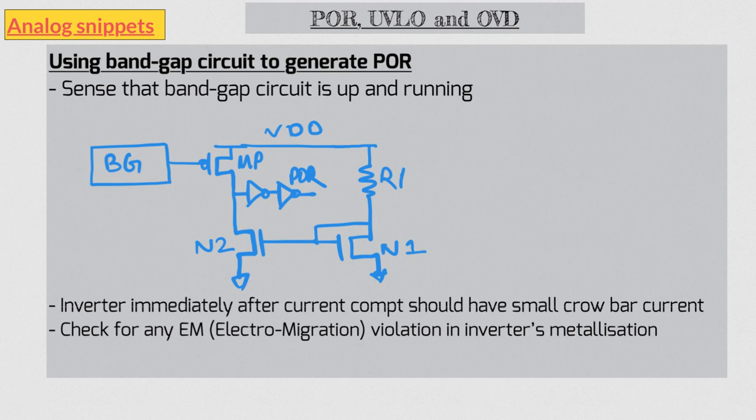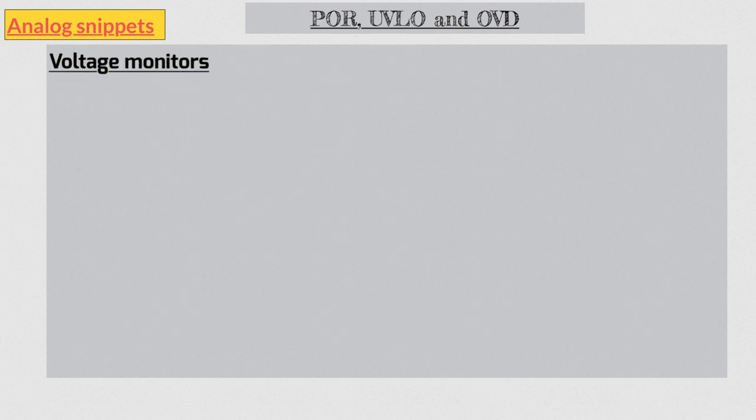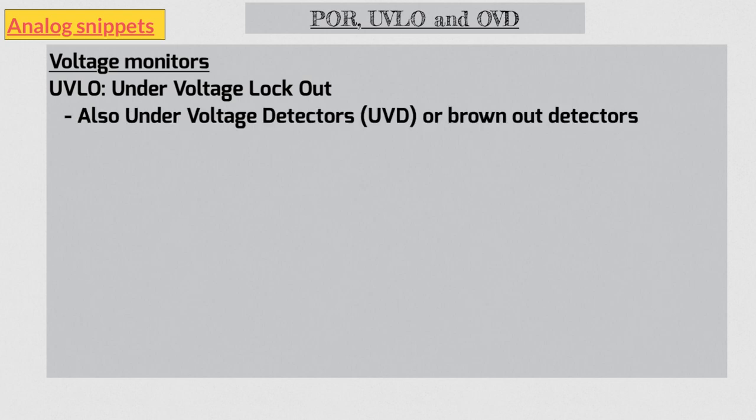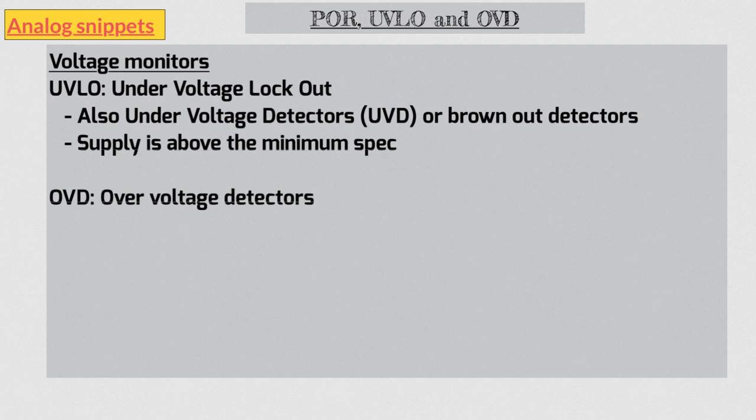Okay, now let's move to voltage monitors. There are typically two types of voltage monitors for supplies. The so-called UVLO or under-voltage lockout. They are also known as under-voltage detector or brownout detectors. These circuits indicate that the supply voltage is above the minimum specified voltage. Second type of detectors are over-voltage detectors, and as name indicates, these detectors tell that supply is above their specifications. Under-voltage detectors guarantee the performance of analog or digital circuits, while over-voltage detectors ensure that there are no reliability concerns. Both types of detectors use the same circuit architectures.